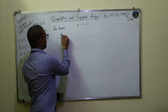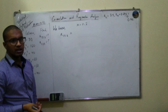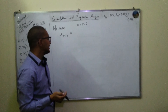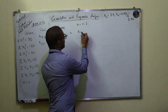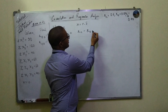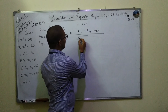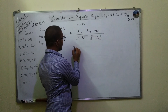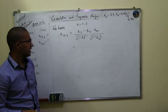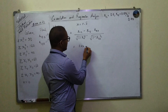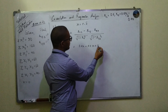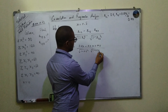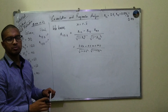Now we find the partial correlation r13.2 — keeping variable 2 constant, the effect of variable 3 on variable 1. The formula is: r13.2 = (r13 minus r12 times r23) divided by square root of (1 minus r12 squared) times (1 minus r23 squared). Substituting: numerator is 0.67 minus 0.5 times 0.75.